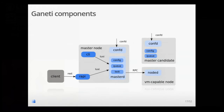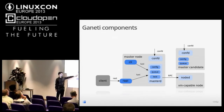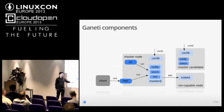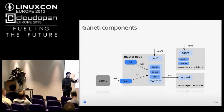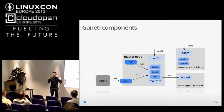Here is an overview of the Ganeti infrastructure. You control Ganeti either through command line tools or through clients that communicate with the remote API. The remote API is a daemon listening for commands. Then we have the master daemon, which runs only on the master node. It's responsible for managing the cluster configuration, managing the queue of all jobs submitted by sysadmins, and managing the locks that control proper execution of those jobs.